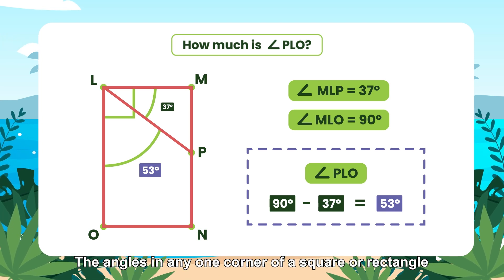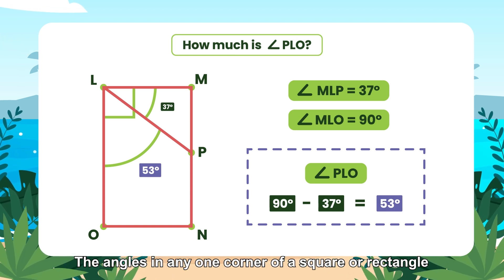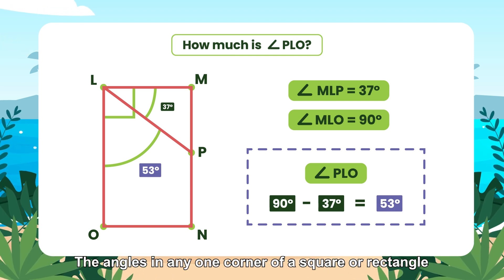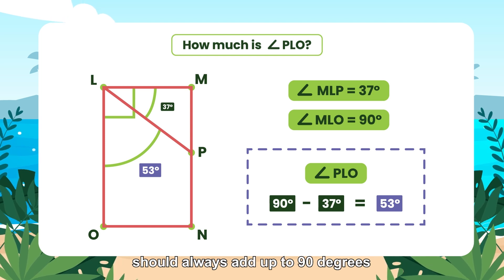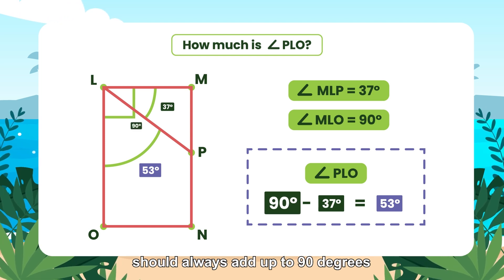The angles in any one corner of a square or rectangle should always add up to 90 degrees.